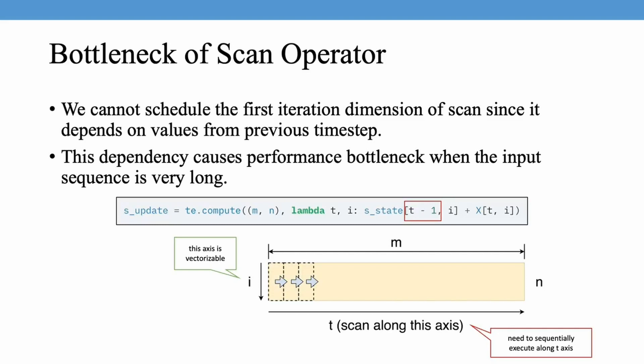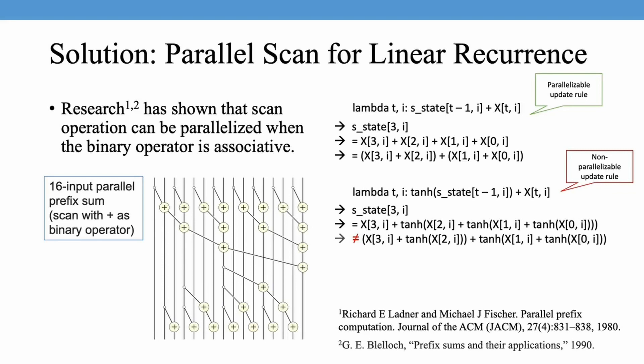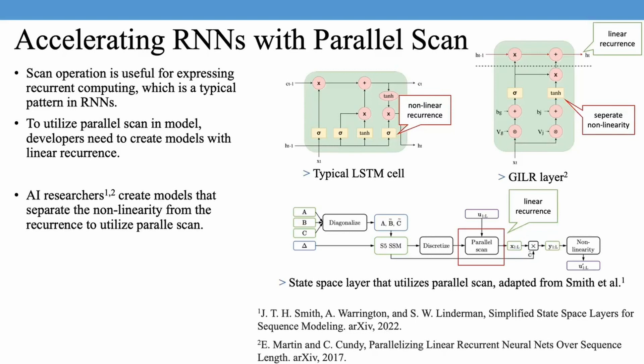Research has shown that scan operation can be parallelized when the binary operator is associative. The work from Belloc suggests methods to model complex linear recurrence patterns as an associative binary operator. The symbolic tensor update rule shows a parallelizable linear recurrence update rule and a non-parallelizable update rule due to non-linear recurrence. Scan operation is useful for expressing recurrent computing, which is a typical pattern in RNNs.